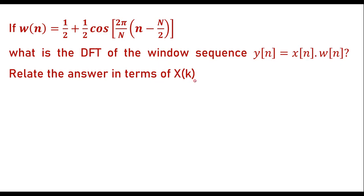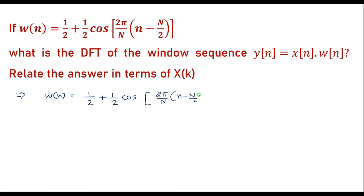Relate the answer in terms of X of K. In this numerical, W of N is given, that is W of N is equal to 1 over 2 plus 1 over 2 cos of 2 pi by N into N minus N by 2. We are supposed to find Y of N which is equal to X of N into W of N. Let me call this equation number 1.